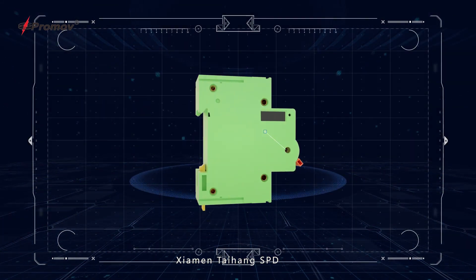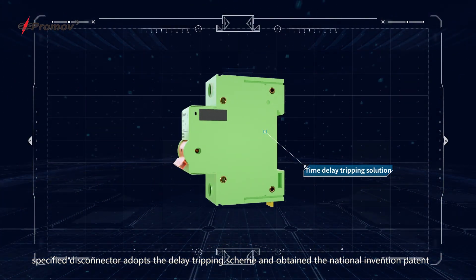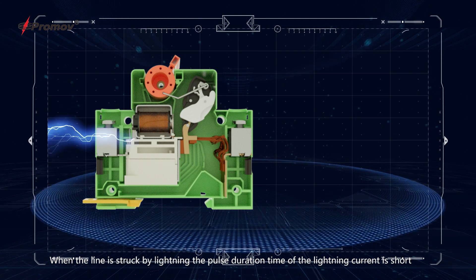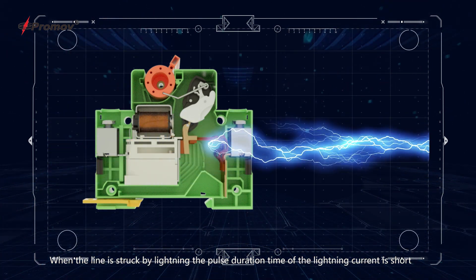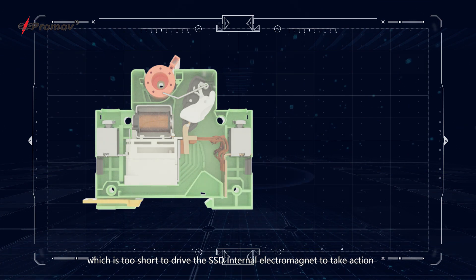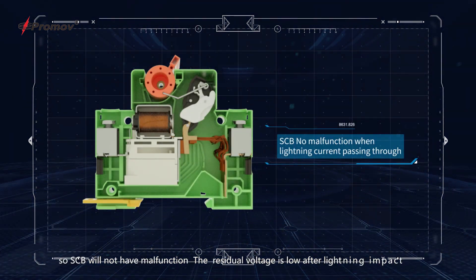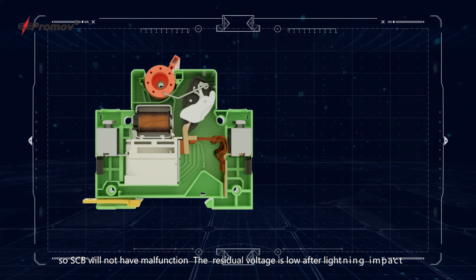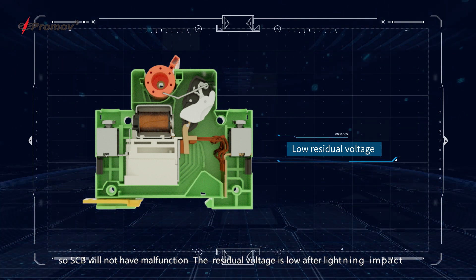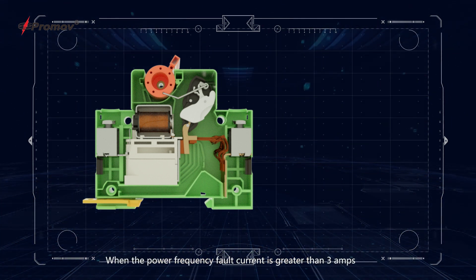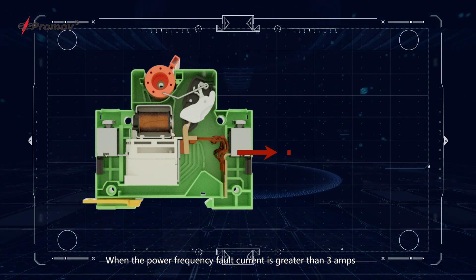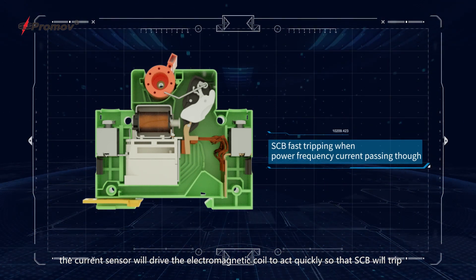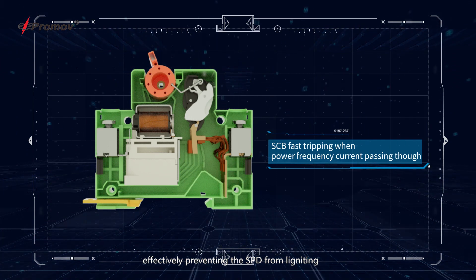Xiamen Taihang's SPD-specific disconnector adopts a delayed tripping scheme and has obtained a national invention patent. When a line is struck by lightning, the pulse duration of the lightning is very short — too short to drive the SSD's internal electromagnet to take action — so the SSD will not malfunction. The residual voltage is low after lightning impact. When the power frequency fault current is greater than 3 amperes, the current sensor drives the electromagnetic coil to act quickly, causing the SSD to trip and effectively preventing the SPD from igniting.